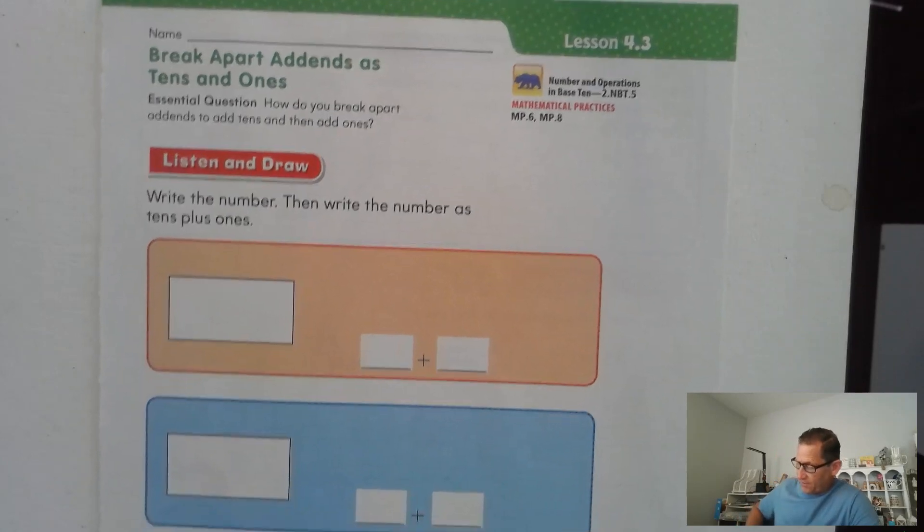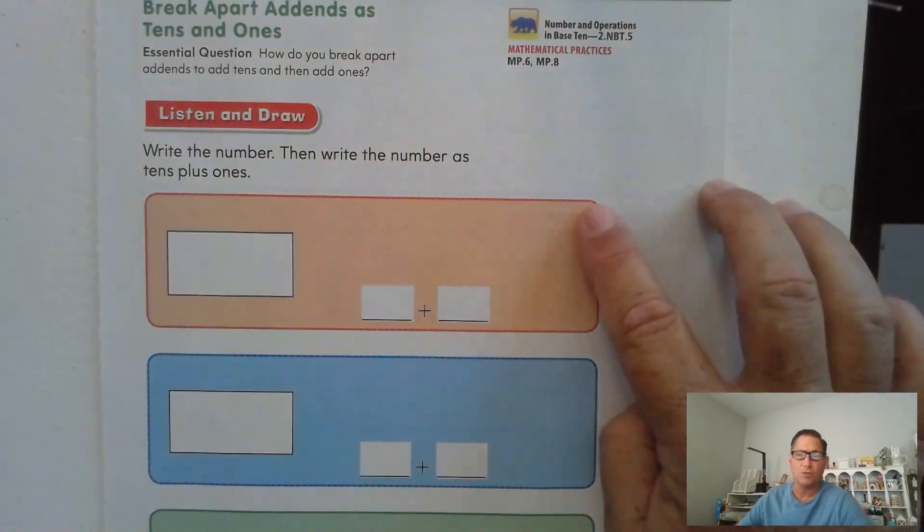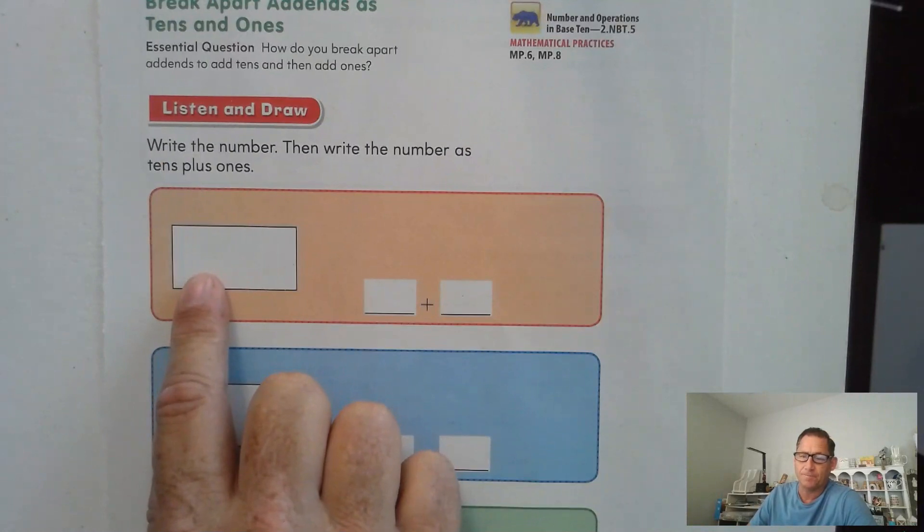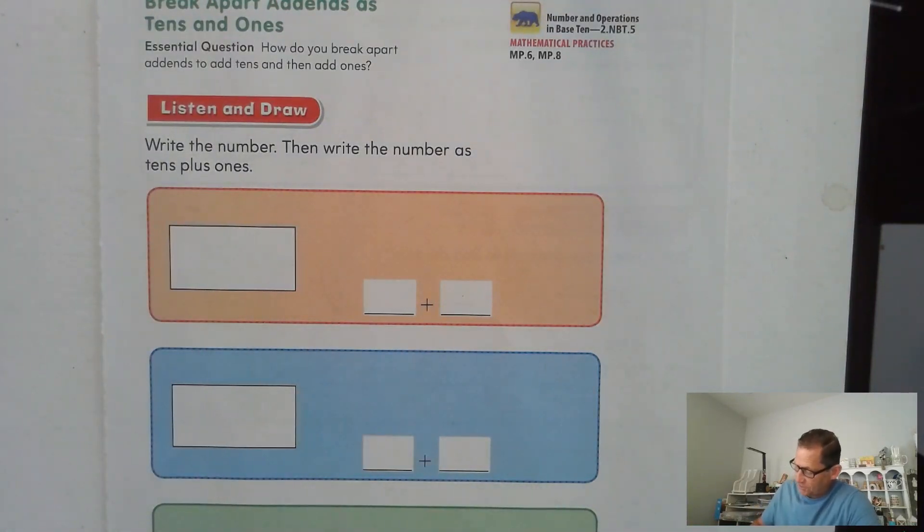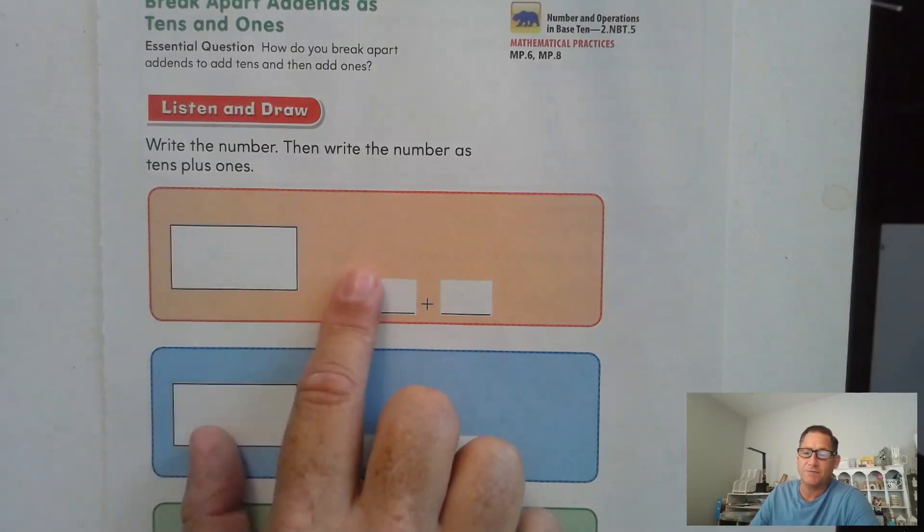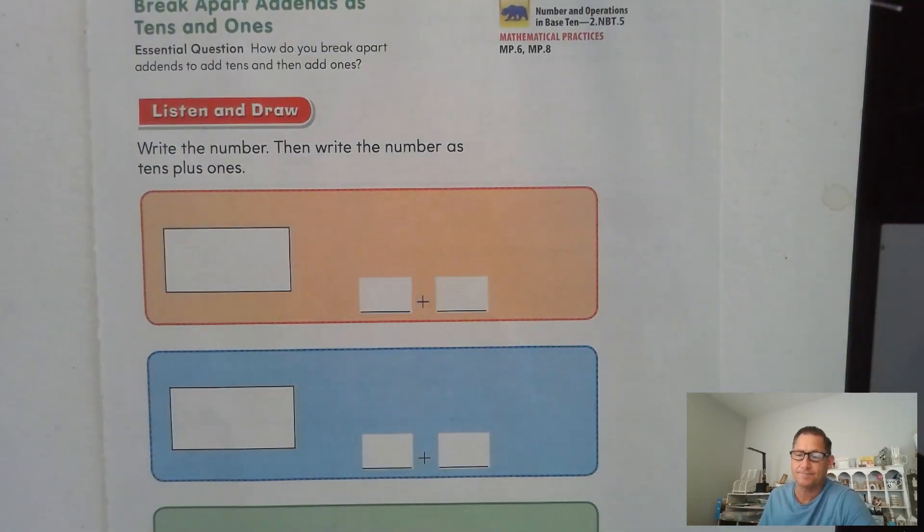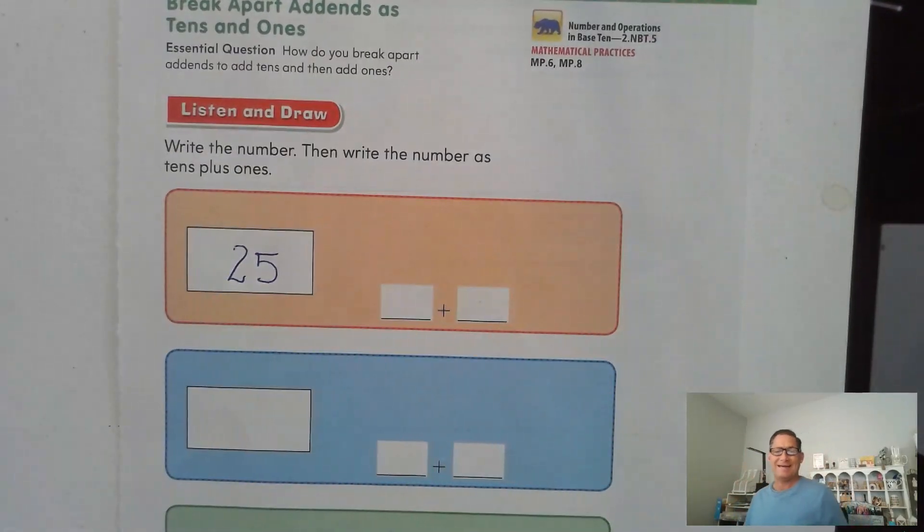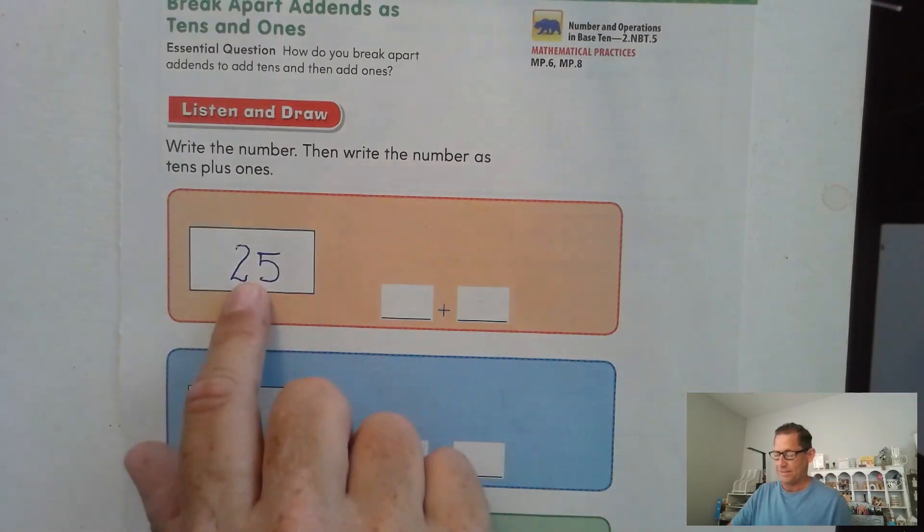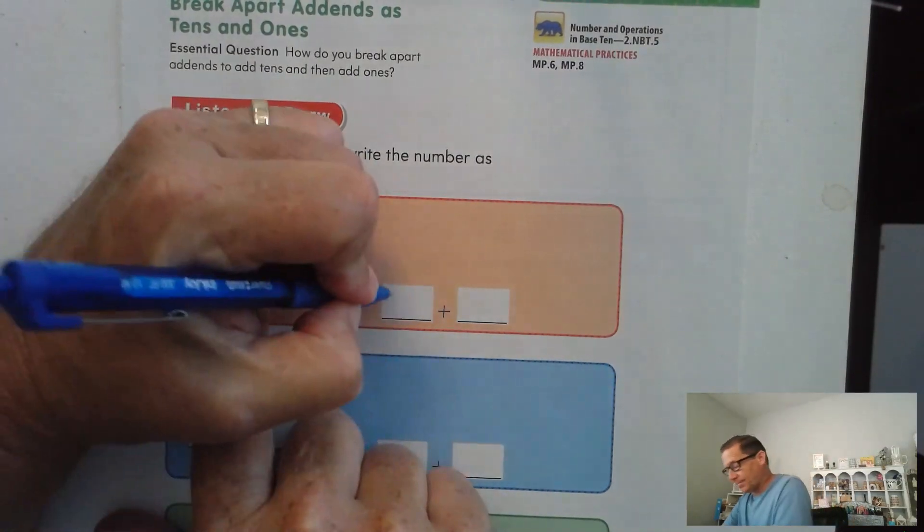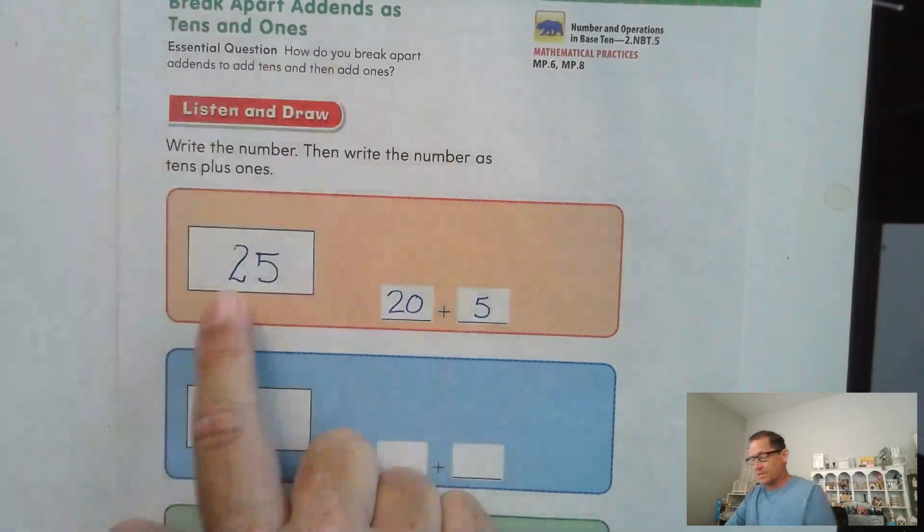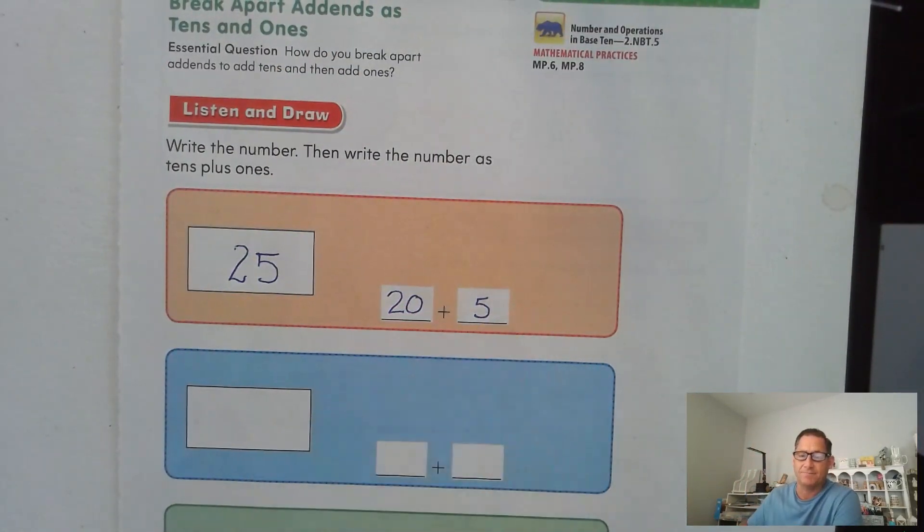So listen and draw the following. Look at the orange box. I want you to write the number 25 in the large rectangle and then I want you to write 25 as a sum of tens and ones. Okay, is this what you came up with? So I asked you to write 25 as a sum of tens and ones. Well, we know there are two tens here. So that's 20 and there are five ones. So 25 is the sum of 20 plus 5.